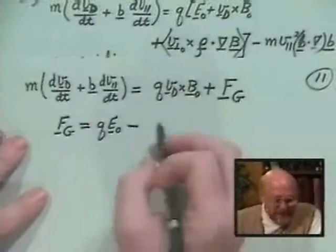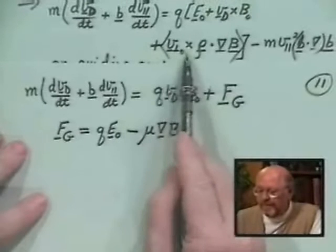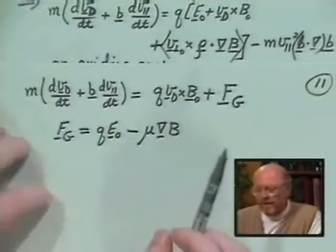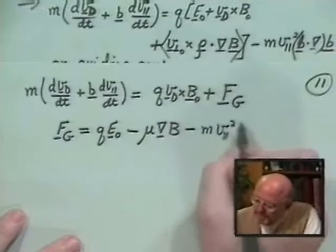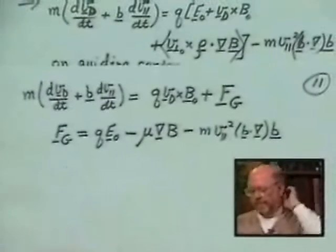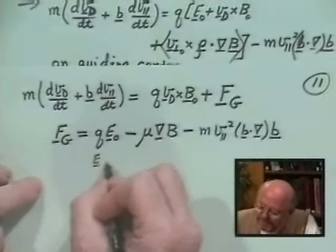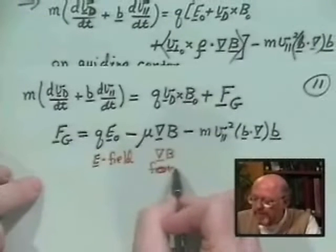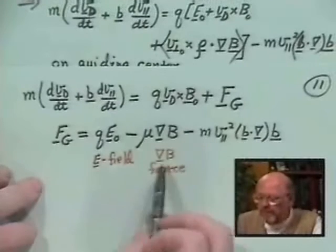And that force on the guiding center is composed of three terms. So the force on the guiding center turns out to be just the q e_naught. And the naught here means that I evaluated it at the guiding center. So this was just the usual electric field force still on the guiding center, both parallel and perpendicular to the magnetic field. In addition, we'll have what's called a mu grad B force.